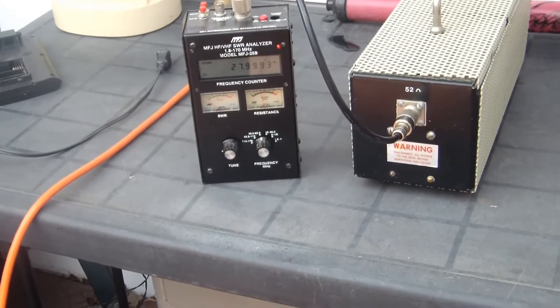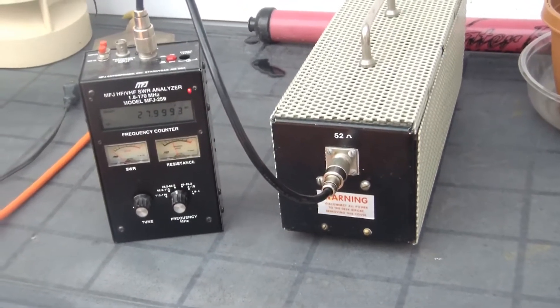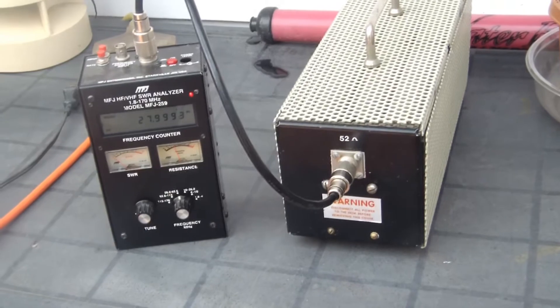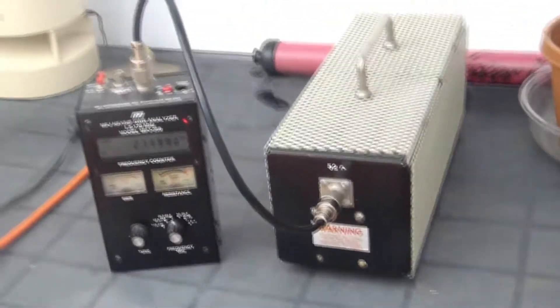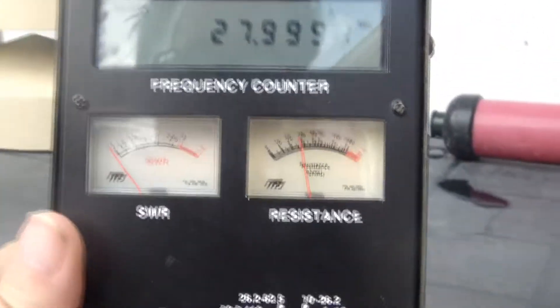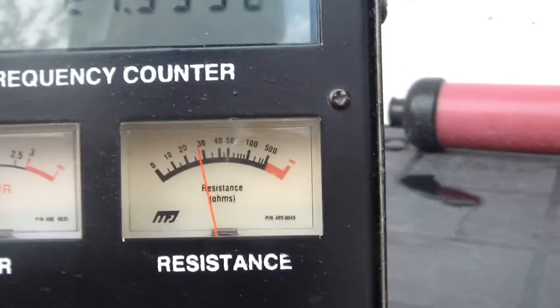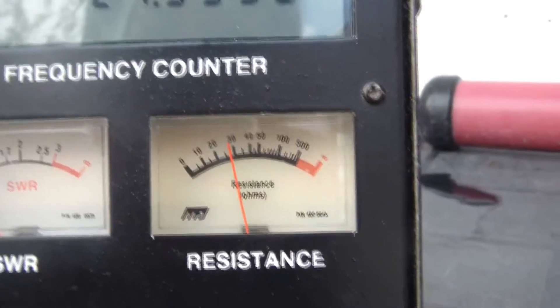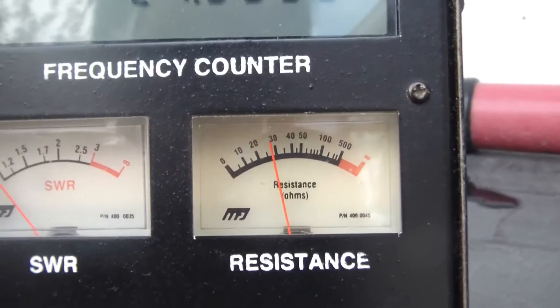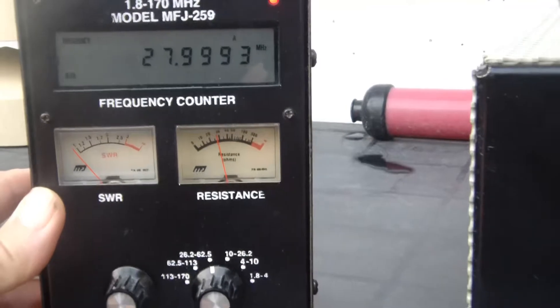Hello and welcome back. This is a follow-up to my garage sale findings recently and I'm looking here at the dummy load. So hooked it up to the MFJ here and I'm not liking what I'm seeing. Right hand side there on the resistance—that's not 50 and that's not even close. So a little bit disappointing.